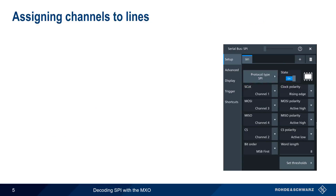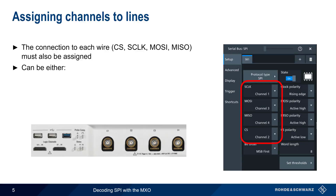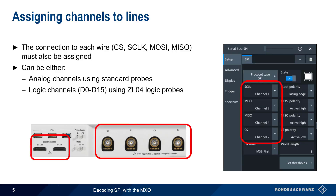The next step is defining the connection to each of the four wires used in SPI — chip select, clock, MOSI, and MISO. These connections can be made either using the analog channel inputs and standard passive probes, or by using the logic channel connectors attached to logic probes. In this presentation, we'll be using analog channels, but the configuration and analysis function more or less identically for both types of inputs.